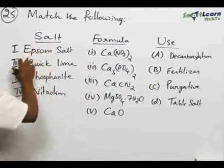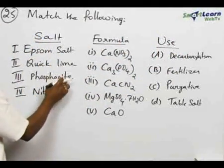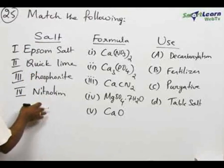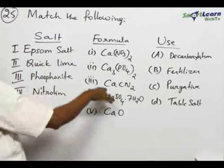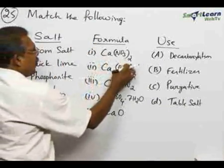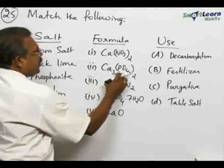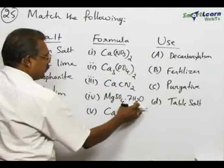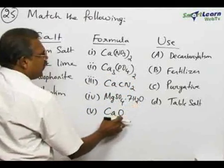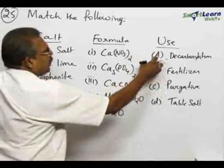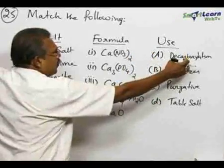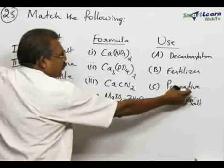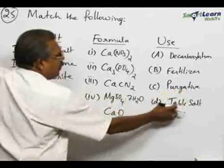For example, here we have Epsom salt, quick lime, phosphoryte, and nitrolim as the substances. The formulas given are Ca(NO₃)₂, Ca₃(PO₄)₂, Ca(CN)₂, MgSO₄·7H₂O, and CaO. In the use column: A is decarboxylation, B is fertilizer, C is purgative, and D is table salt.